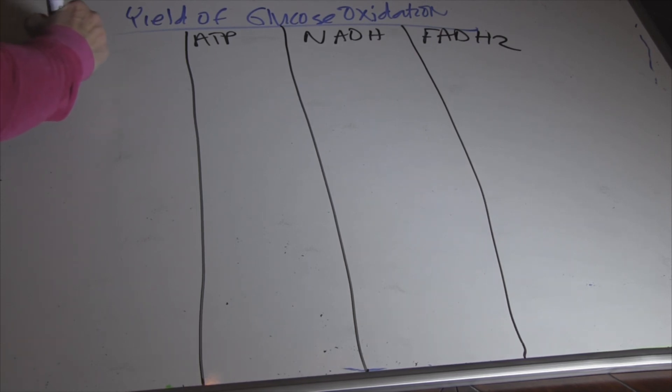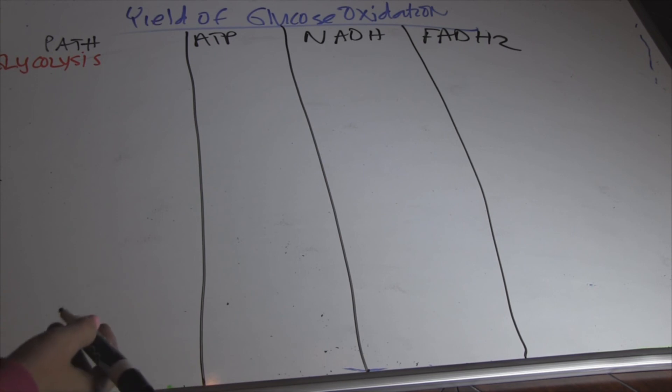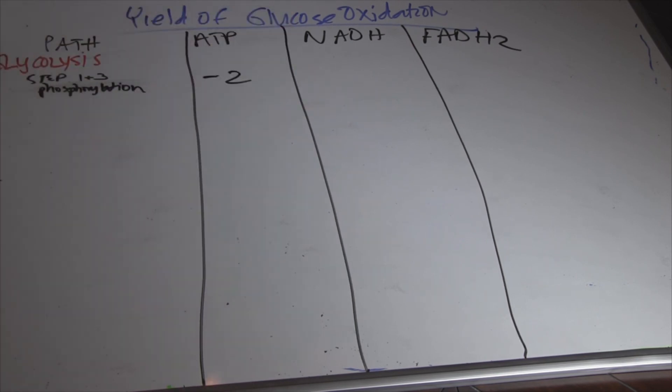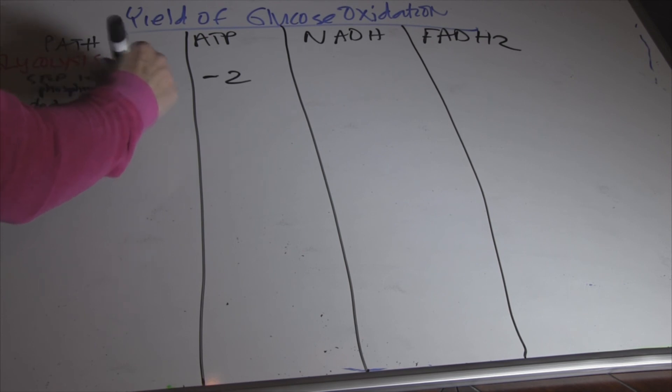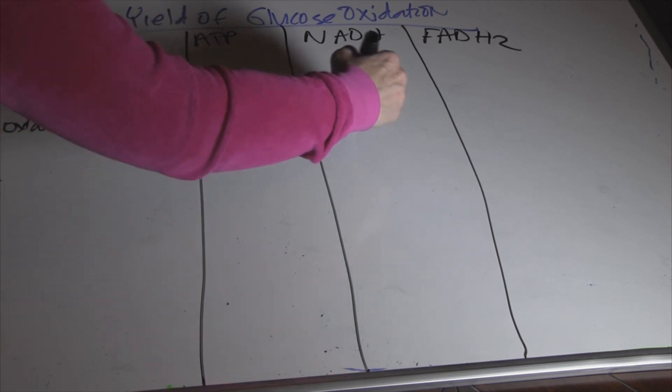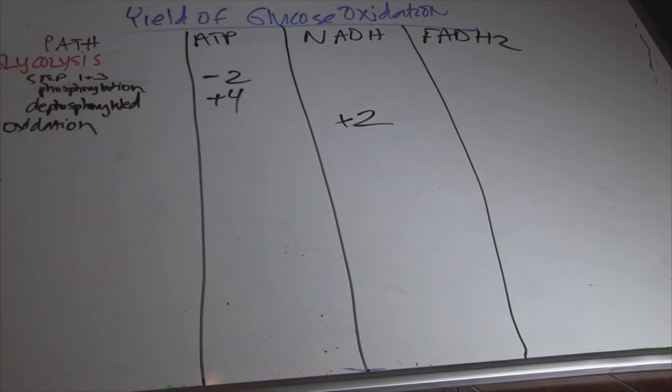First we're going to talk about glycolysis. We had two steps in glycolysis that we needed energy. Steps one and three. Remember there's ten steps in glycolysis. So we have step one and three. We actually had to phosphorylate. So I'm going to say minus two there. So we lost ATPs in glycolysis. And then we dephosphorylated. And we ended up getting plus four. So the yield, remember, from glycolysis was a plus two of ATP. And we also got an oxidation step when we oxidized glyceraldehyde 3-phosphates. That we got here. That is a plus two of NADH. So that's glycolysis.